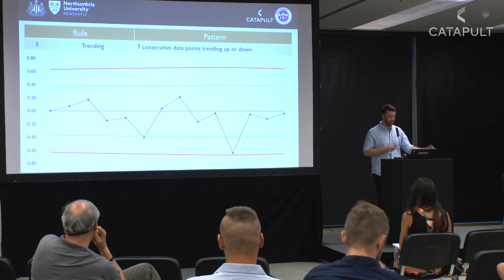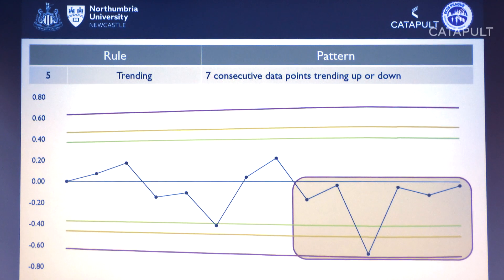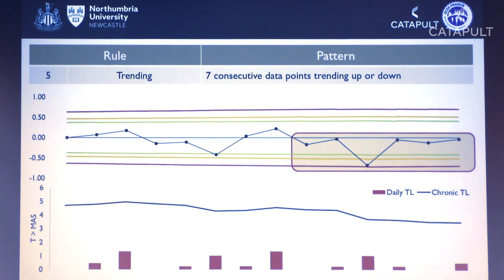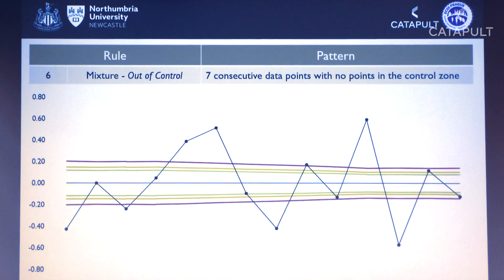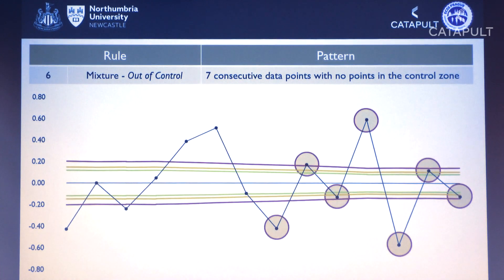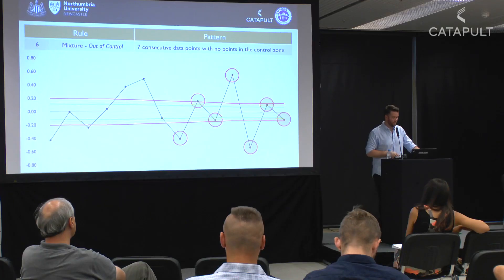On the flip side, seven consecutive data points going negatively — we need to increase that player's training load to improve the training process, and you can see their training load was much lower than the previous player. Rule 6: mixture or out-of-control. This player had quite steady, consistent training and tight control limits, but over the last seven days has had big drop-offs and big increases — very erratic. We want to adapt their training to make it less undulating.